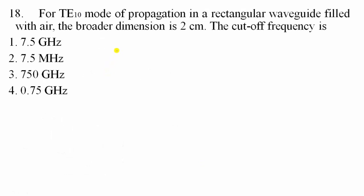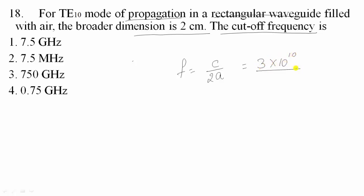Question 18: For the TE10 mode of propagation in a rectangular waveguide filled with air, with broader dimension a = 2 cm, the cutoff frequency is given by fc = c/(2a). Substituting: fc = (3×10¹⁰ cm/s)/(2×2 cm) = 0.75×10¹⁰ Hz = 7.5 GHz. Option 1 is correct.